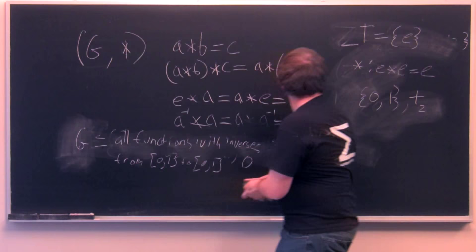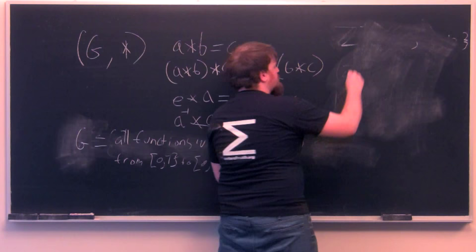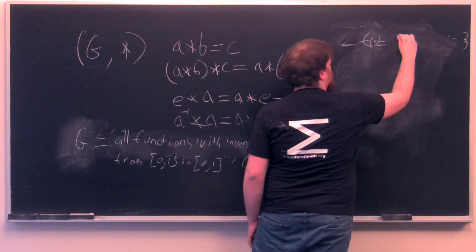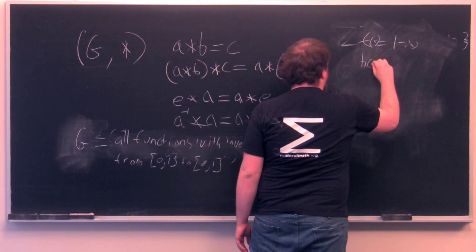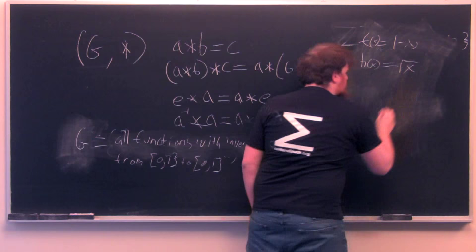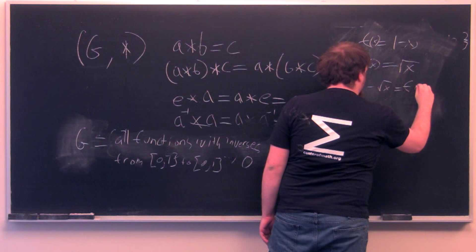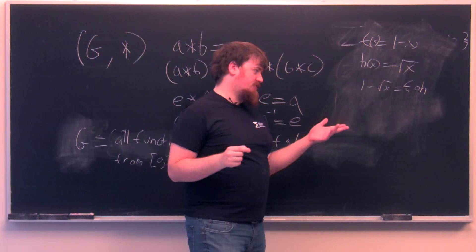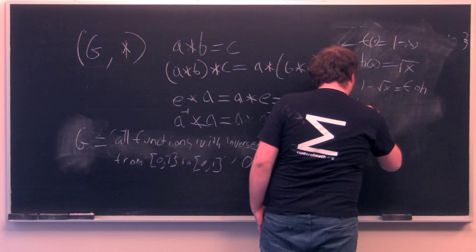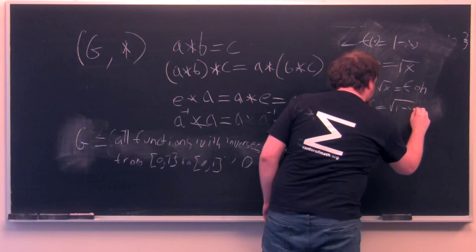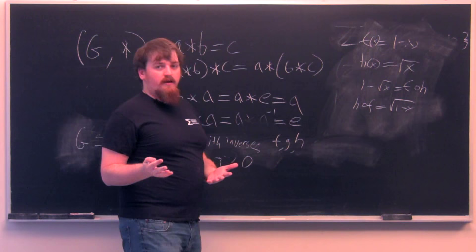We can write some functions, say, f equals f of x equals 1 minus x and h of x equals square root of x. So, if you write f of h, then we get 1 minus square root of x equals f composed with h. This is the simple symbol which is usually used for composition. But if you write h of f of x, we get square root of 1 minus x. And these aren't the same function, so that means that this group G is not abelian, in the sense that its operation isn't commutative.